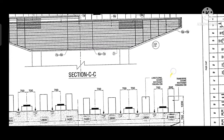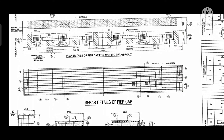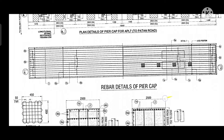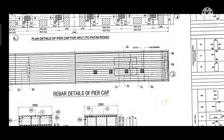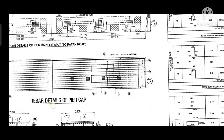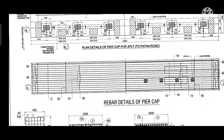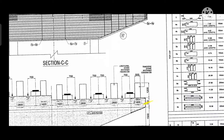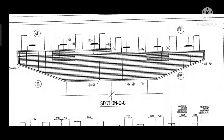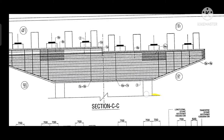First we will see remark 1A, which is the top reinforcement of the PRC. We can see in the drawing that 1A is given in section CC and the reinforcement detail of the pier cap. Every remark is given in the detail drawing. Similarly, remarks 2, 3, and other marks are given in the detail drawings — top reinforcement, bottom reinforcement — and two-legged stirrups in the cantilever portion are given in the drawing on both sides.